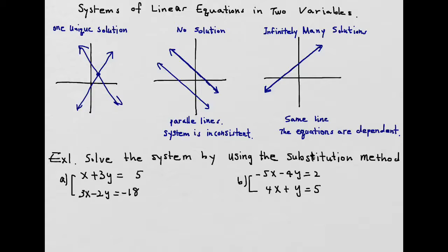The third type is when you have many solutions. Many solutions occur because those two lines are identical — the same line. Since all the points will become your solution, that's why it's going to be many solutions, and we call the equations dependent. So we can have three different types of solutions when solving a system of linear equations with two variables.